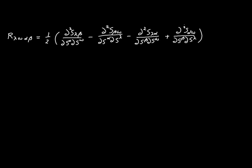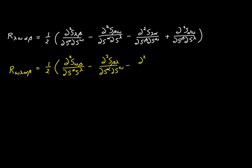The first thing we'll do is to re-express the Riemann tensor after switching the first two indexes — we're going to swap lambda and omega. Observe that this term is the negative of this term; they're the same term with the opposite sign.